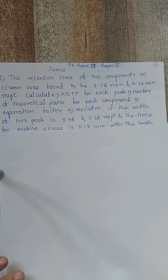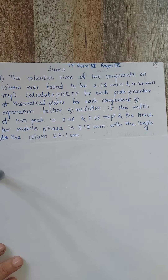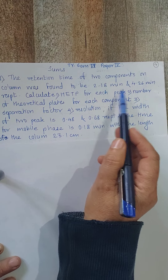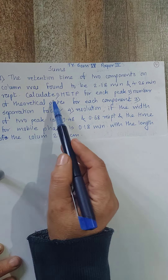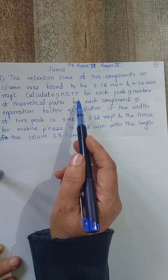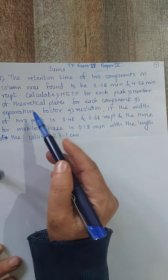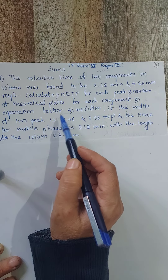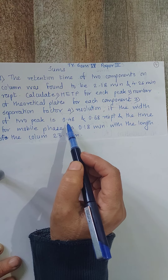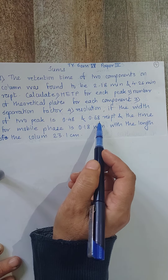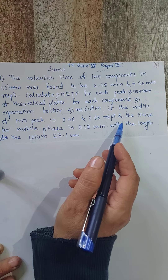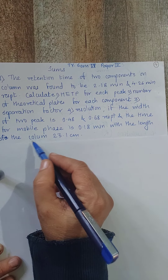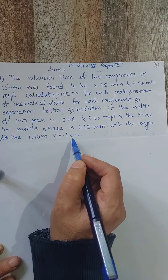The first problem: The retention time of two components on a column was found to be 2.18 minutes and 4.26 minutes respectively. Calculate HETP for each peak, number of theoretical plates for each component, separation factor, and resolution if the width of the two peaks is 0.48 and 0.68 respectively.